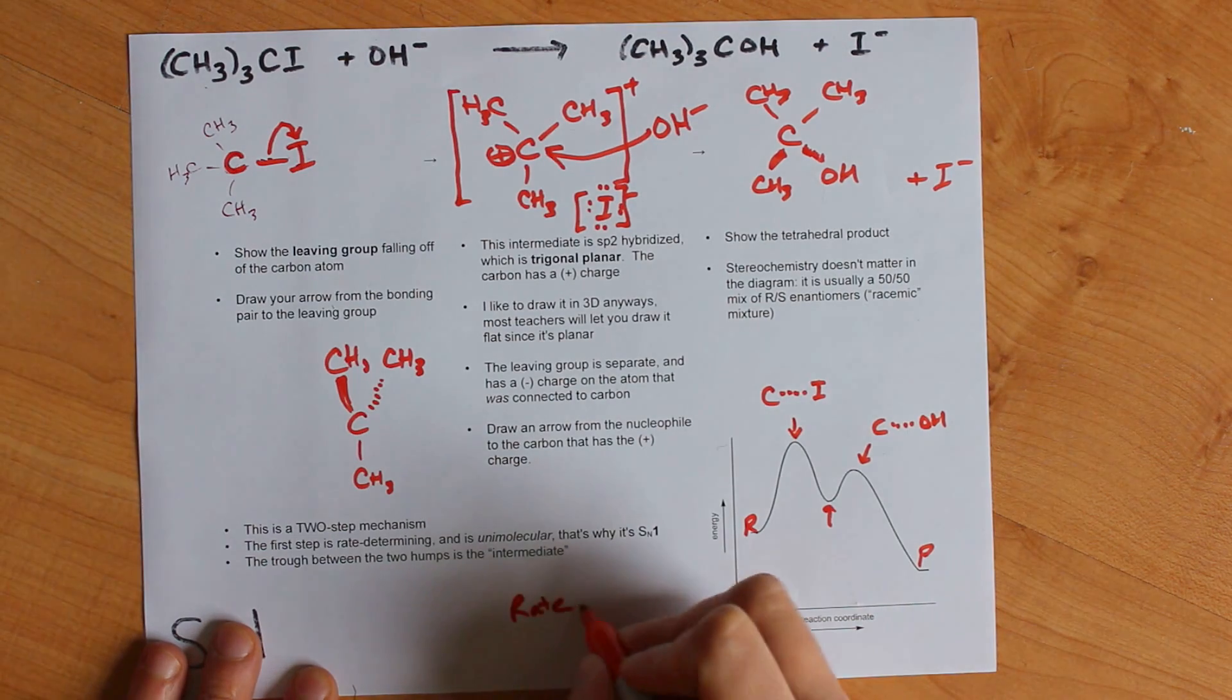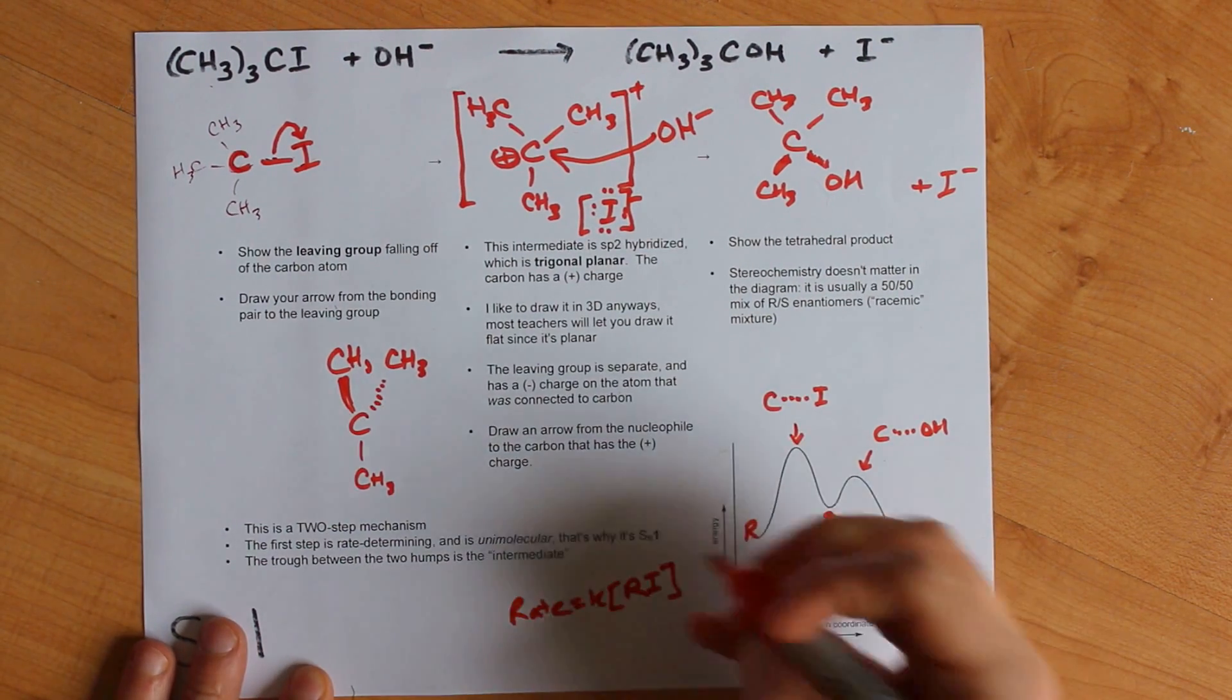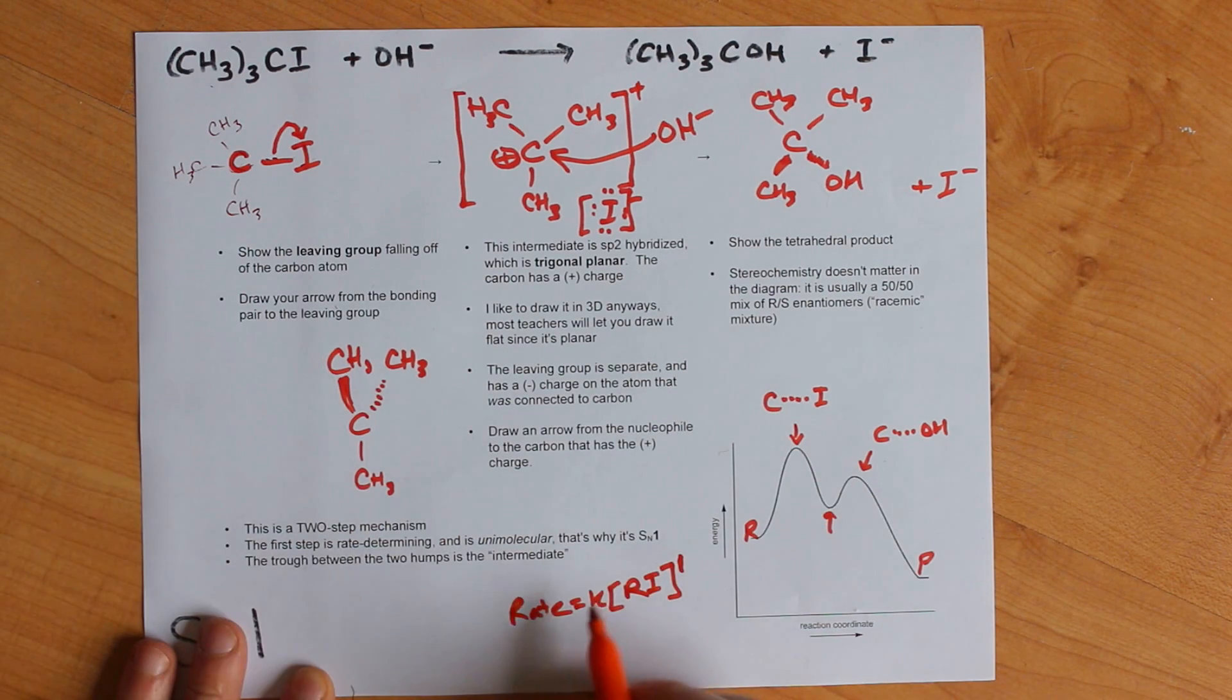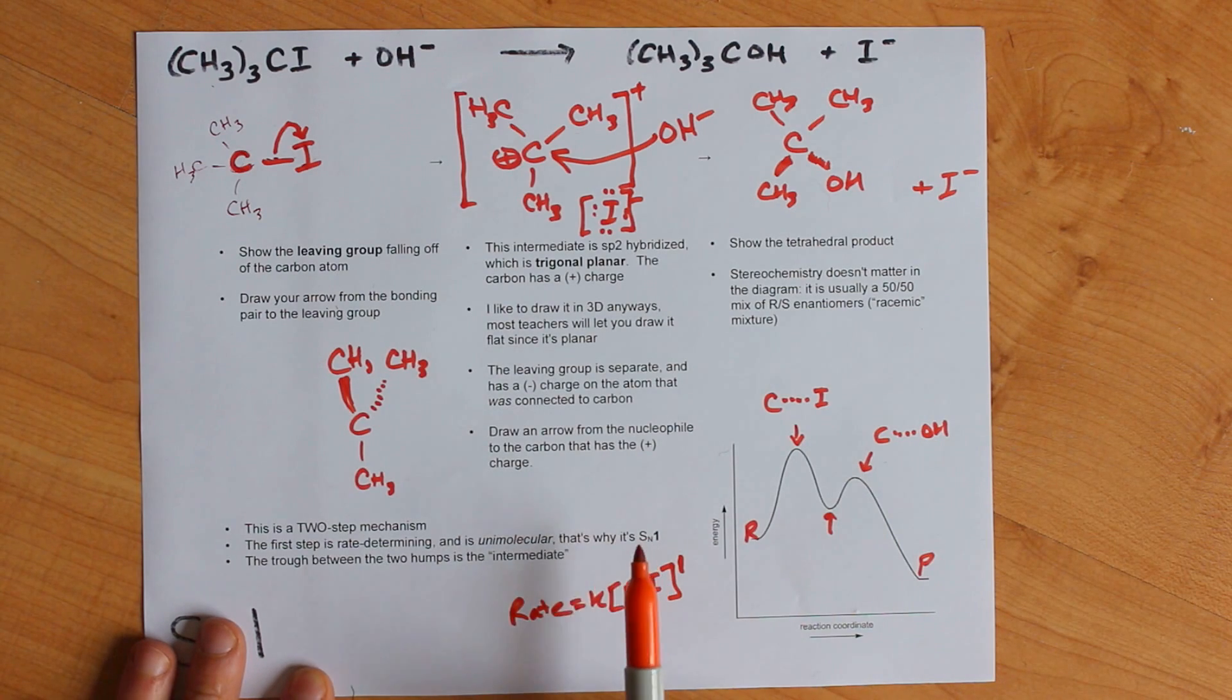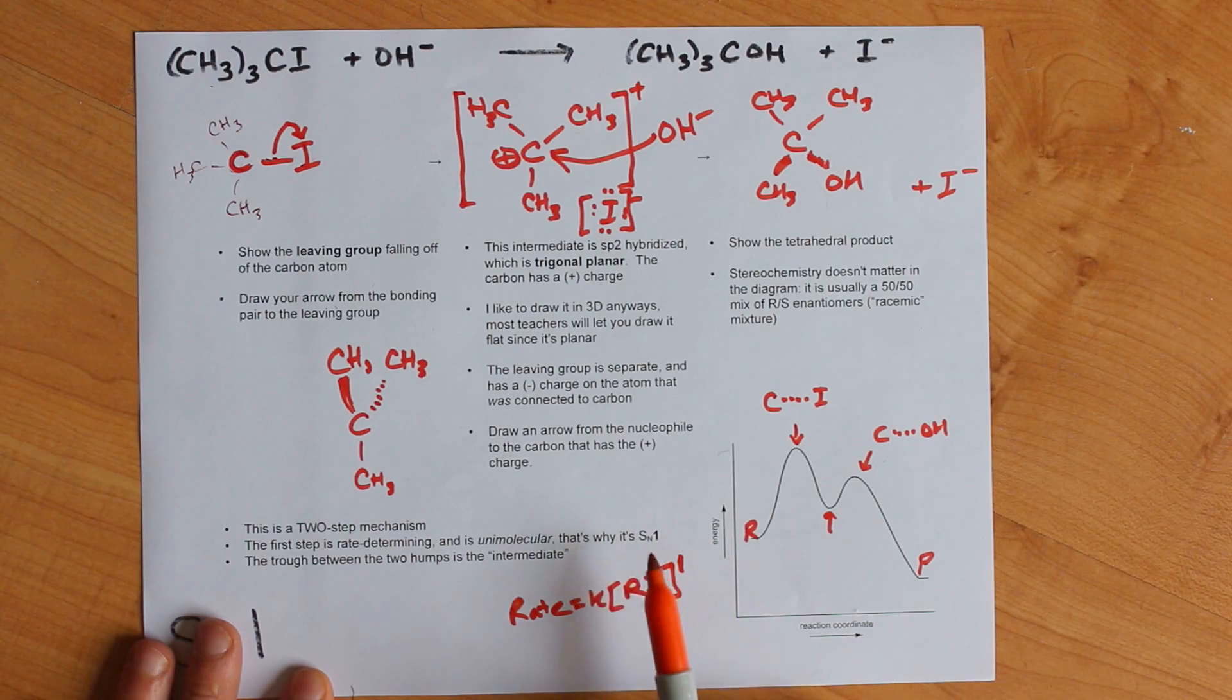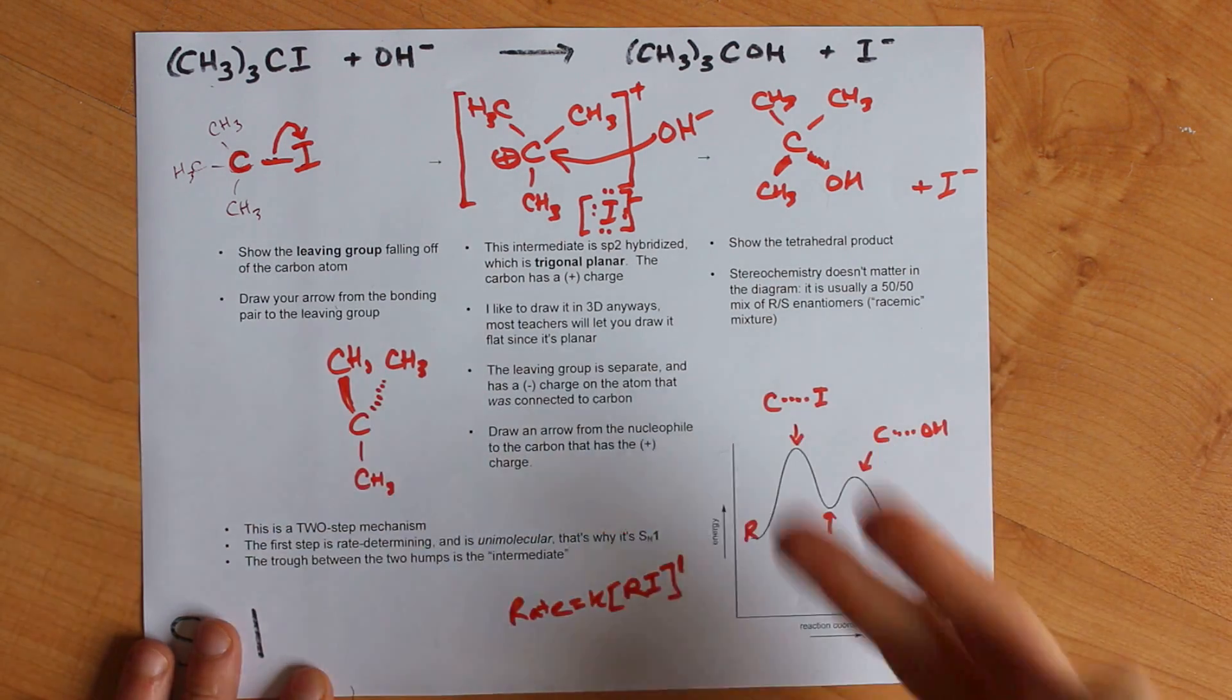The rate law for that reaction would be K times the concentration of your alkyl halide to the power of one, because there's only one of those molecules reacting at that time. That means it is a unimolecular first step, and that's why we have one in SN1. It could be a little confusing. The SN1 reaction actually occurs in two steps. It's called SN1 because the first rate-determining step is one molecule breaking apart into two.